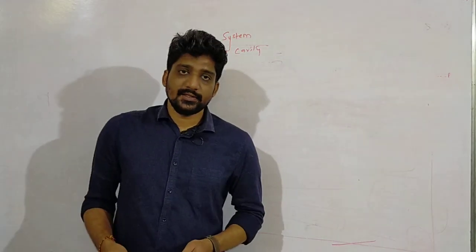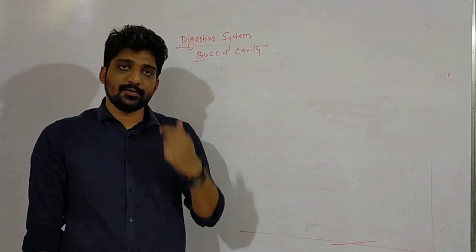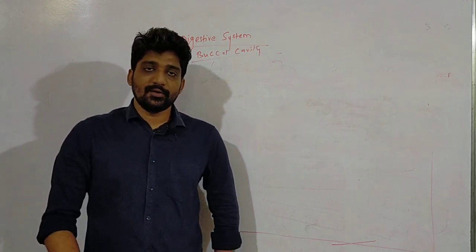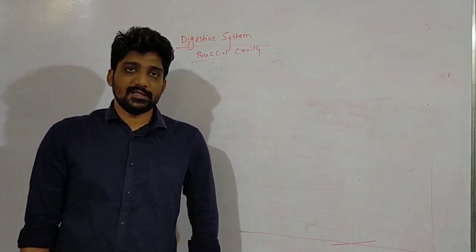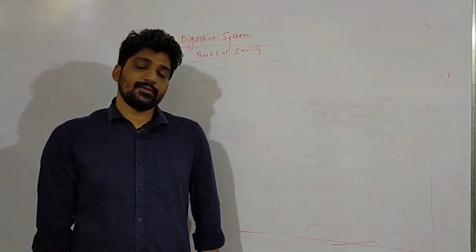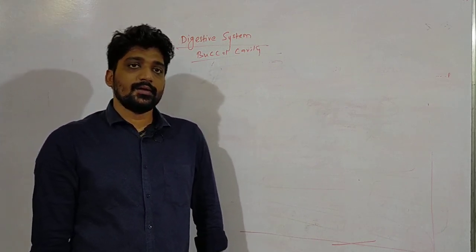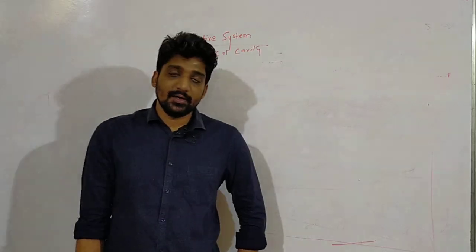Hi guys, this is the third lecture of the digestive system. In the previous lecture we discussed about the structure of teeth. There I forgot to say one thing - the enamel and the dentine is made up of calcium and phosphate, so we have to make a note of that.